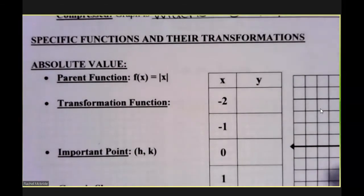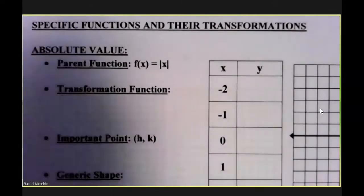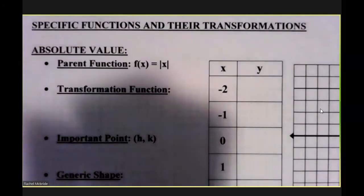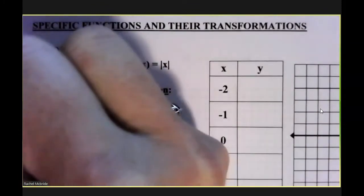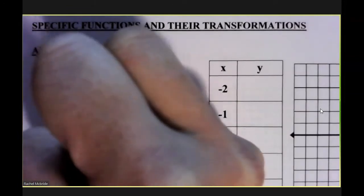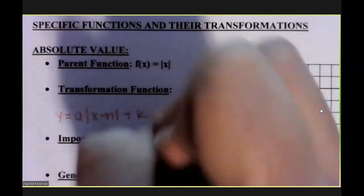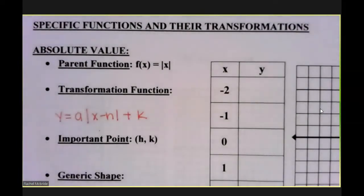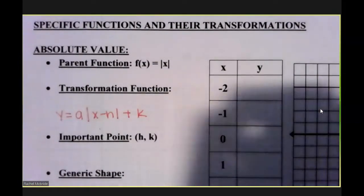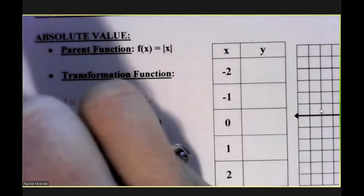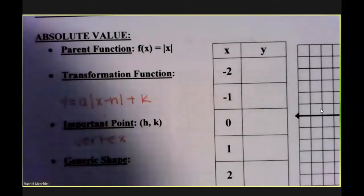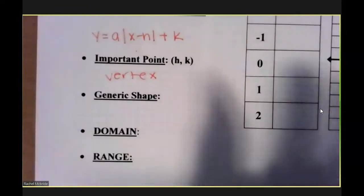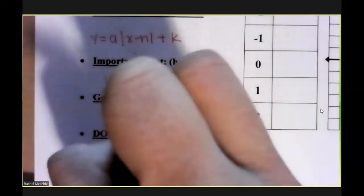We have the parent function. The parent absolute value function is absolute value of x. Its transformation function is y equals a, absolute value of x minus h plus k. The most important point is h comma k. This point is known as our vertex.